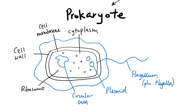The last structure is this extra layer covering the whole bacterial cell over the cell wall, called the slime capsule. The slime capsule acts as a protective layer — it protects the cell. This is the general cell structure of the prokaryotic cell.